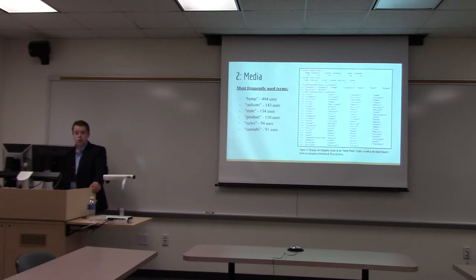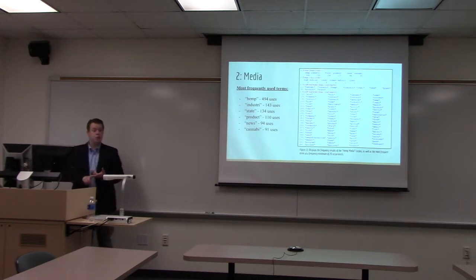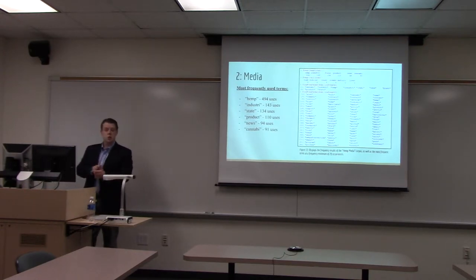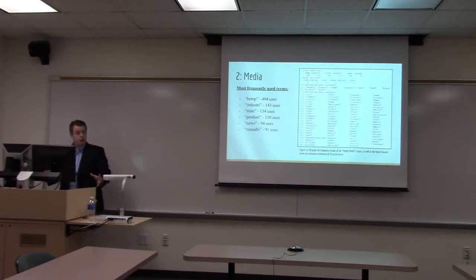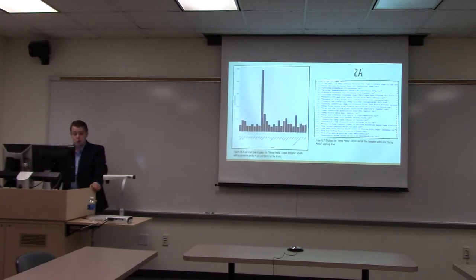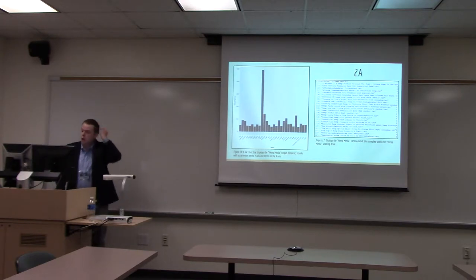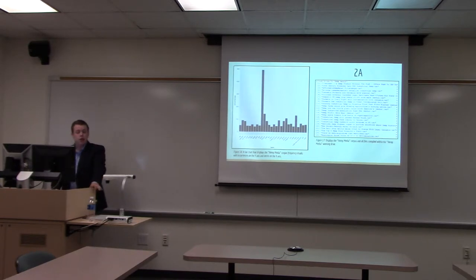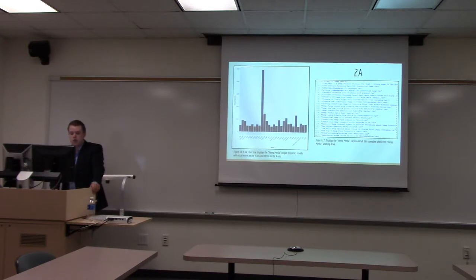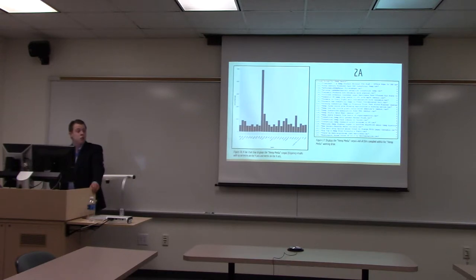Here are the results for our first corpus, media. The most frequently used terms are hemp, industry, state, product, news, and cannabis. That shows what the media is focusing on and what they intend to present to the American people. In the visual representation, hemp comes in at about 500 occurrences, which makes sense since that's the focus. Still present at lower frequency are state, industry, and cannabis. Figure 2A shows what a corpus looks like in R — we assigned the drive to hemp media and from here we can list the files back to verify we are using all articles in the analysis.